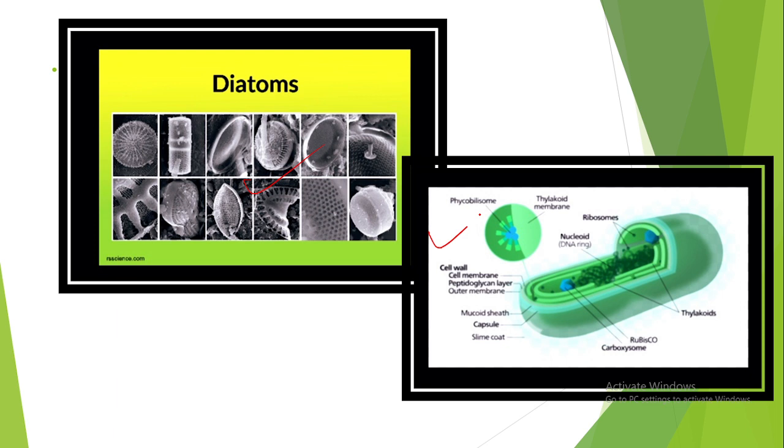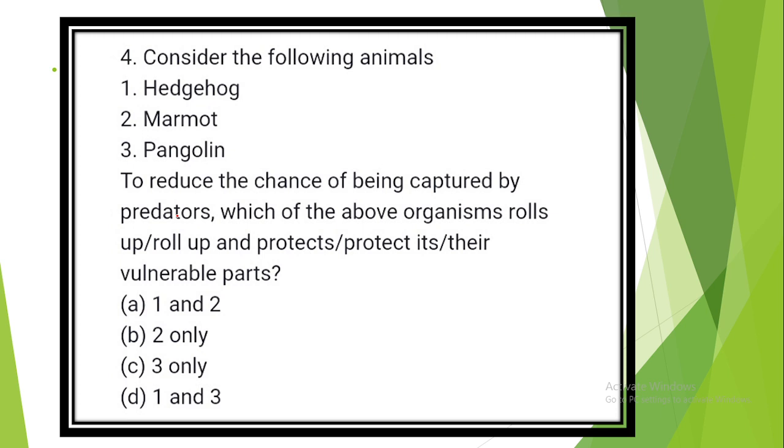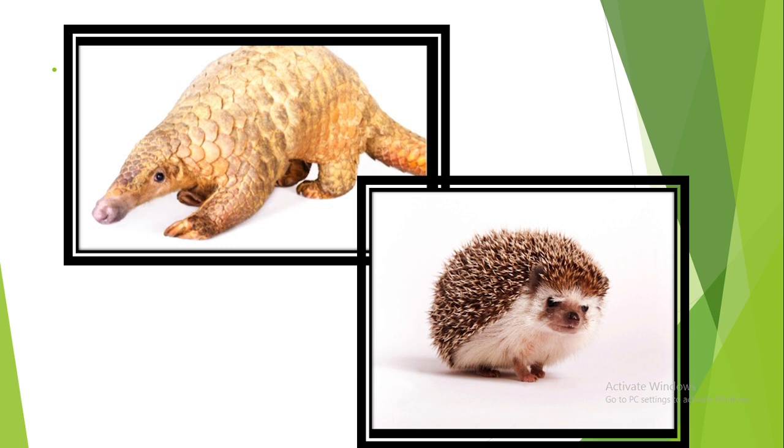Consider the following animals. To reduce the chance of being captured by predators, which of the above organisms rolls up and protects their vulnerable parts? Answer is Option D, 1 and 3: Hedgehog and pangolin. These are the images of these animals.